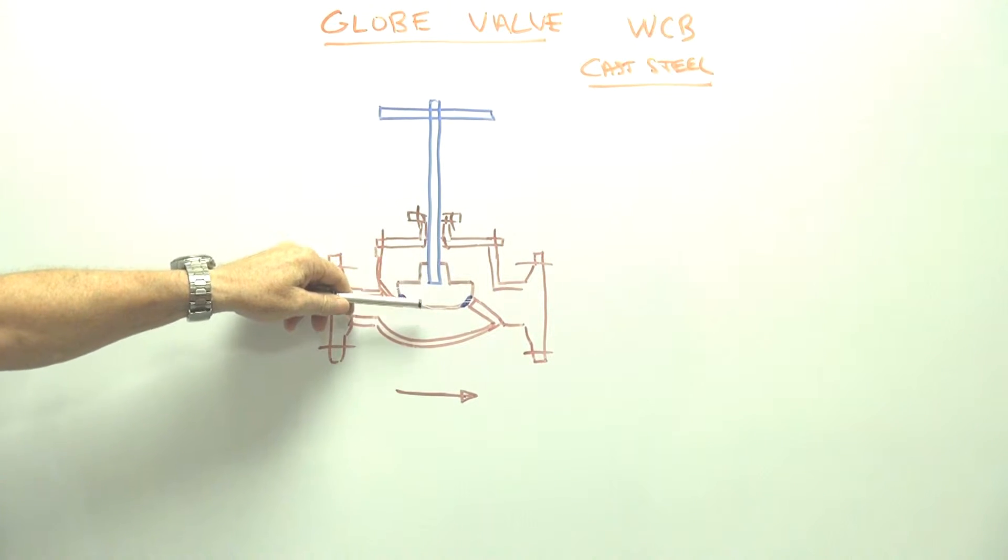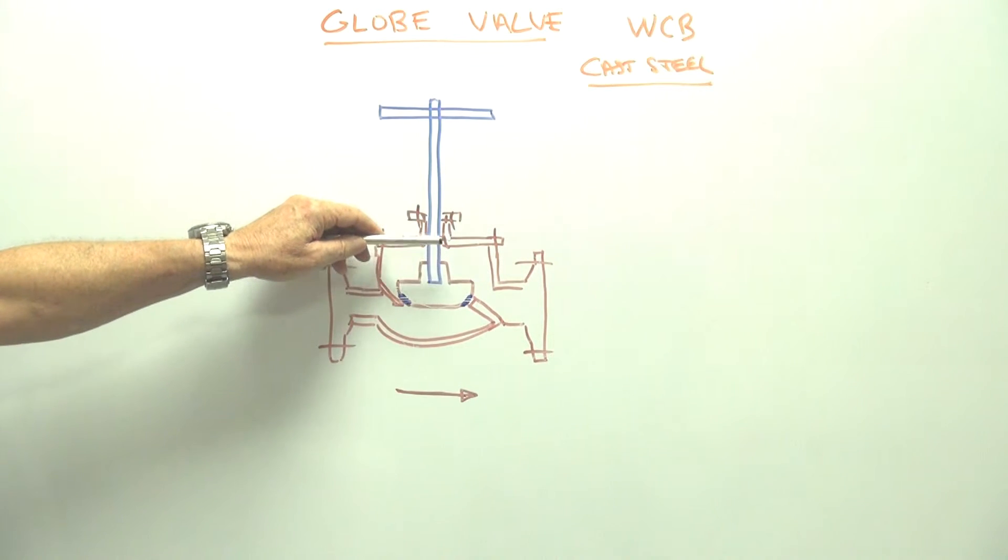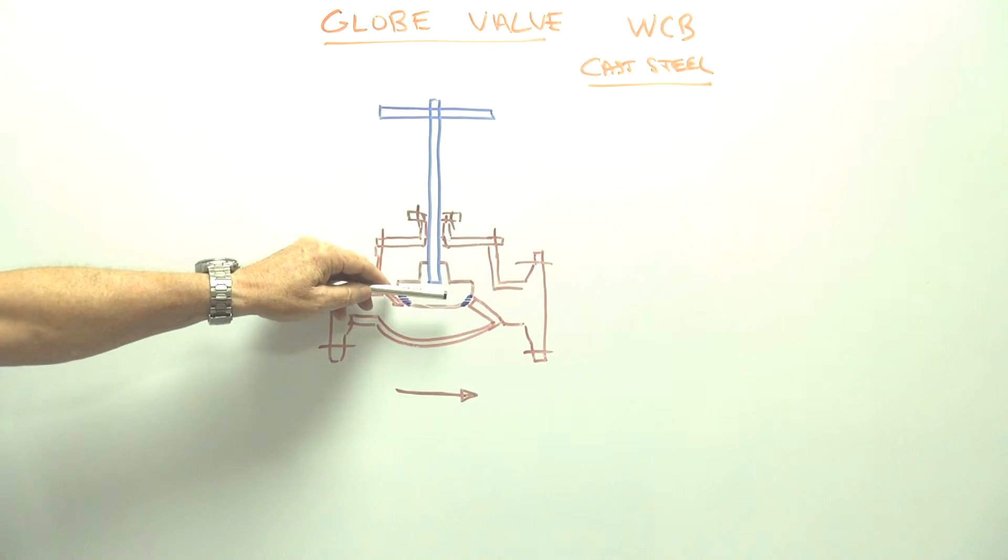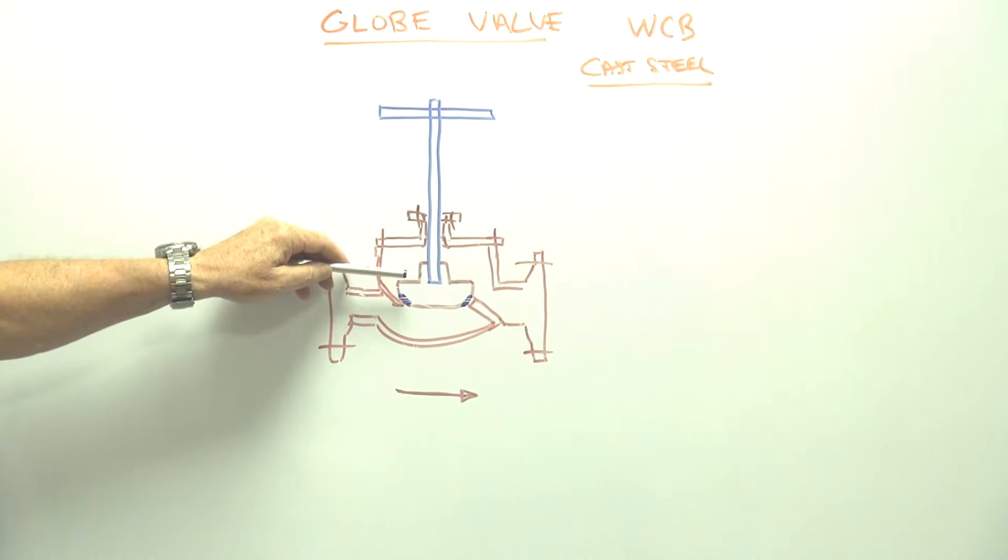As it comes up and down because of the globe shape it gives you a proportion of control. Now this is good over other gate and ball valves because you are getting this flow control effect due to the fact that as it drops into the valve cavity it's giving a proportional opening up of the flow.